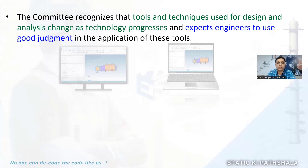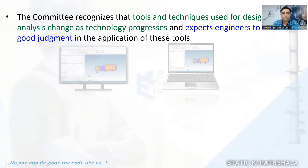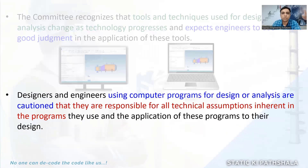The code is saying: the technology is evolving, you can use the evolved tools, but engineers should use good engineering judgment while using these tools. What do we mean by good engineering judgment? If any software gives you an answer, you have to first validate whether that answer is correct or not. You just don't have to follow the software blindly because it has so many inherent assumptions that you should be thoroughly aware of.